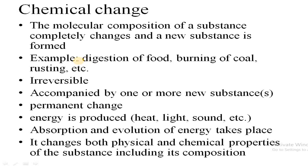In chemical change, physical properties as well as chemical properties may also change — it is a combination of changes in both physical and chemical properties. Examples of chemical changes include digestion of food, burning of coal, and rusting. These are generally irreversible and are accompanied by the formation of one or more new substances.